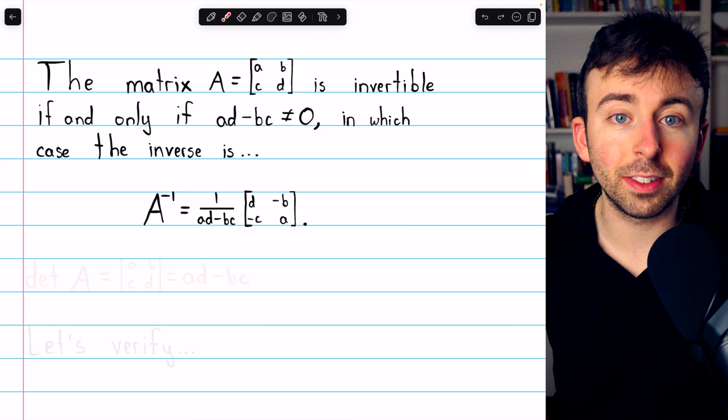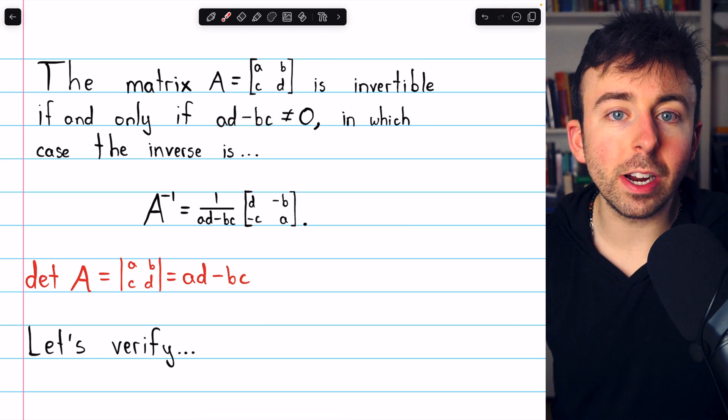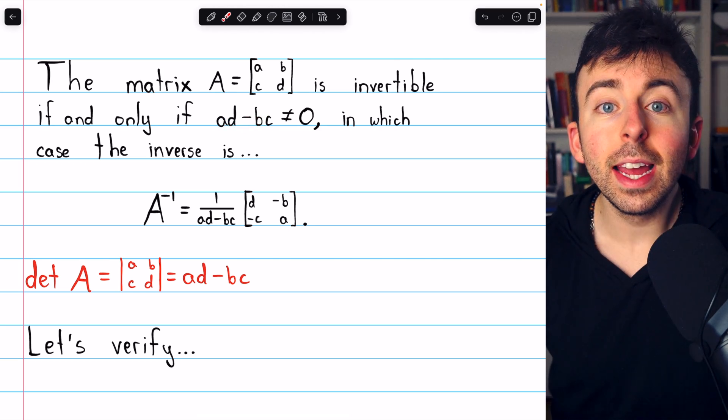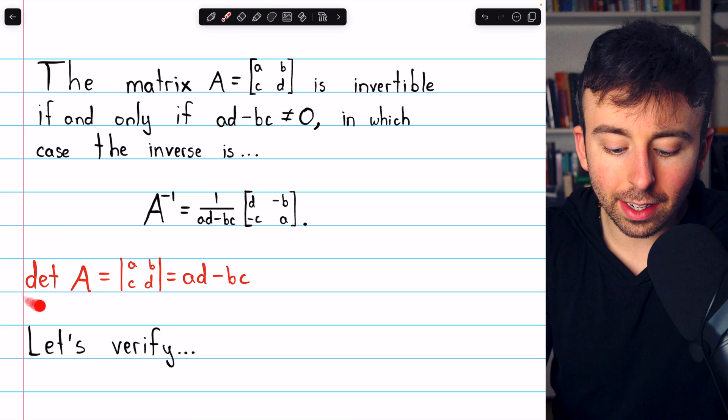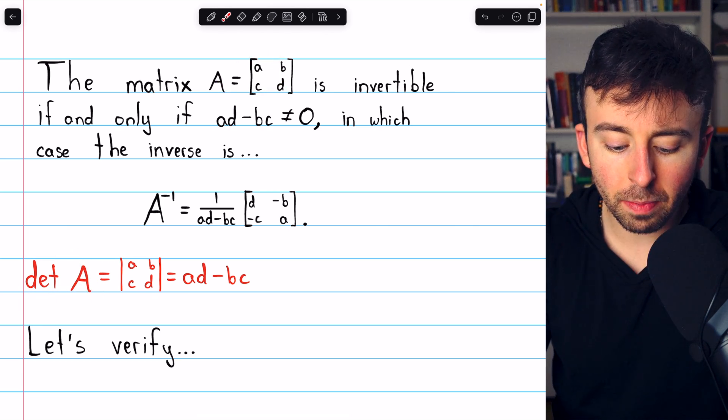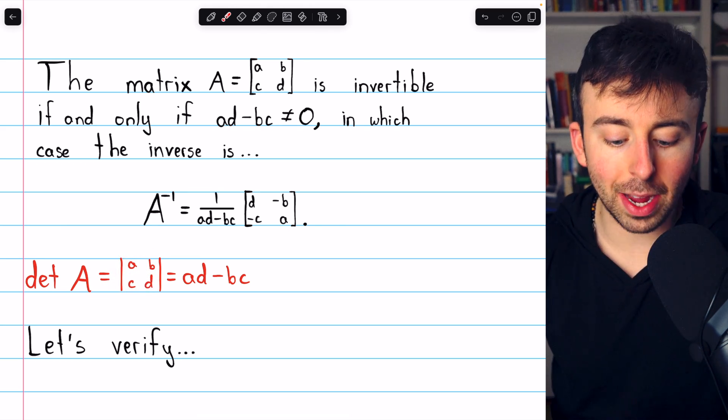It's worth mentioning that this difference we see that's important to finding the inverse, AD minus BC, is what we call the determinant of the 2x2 matrix. That's denoted like this, det A, or also like this.